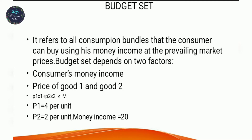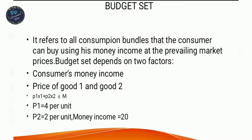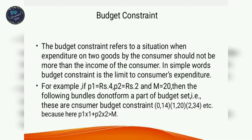The assumption for the budget set is that the total expenditure is equal to income. For example, if p1=6, p2=2 and quantities are 2 and 4, then 6×2=12 and 2×4=8, giving total expenditure of 20 which equals income. Therefore, p1·x1 + p2·x2 = M is called the budget constraint, which shows the limit on the bundles that the consumer can afford.